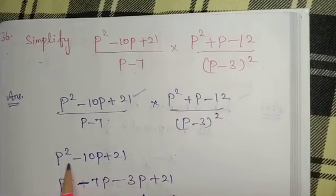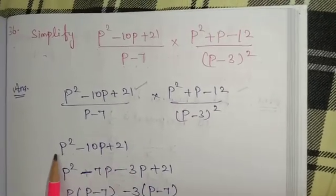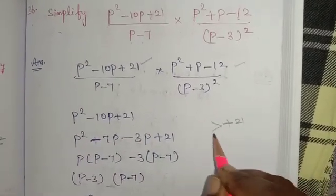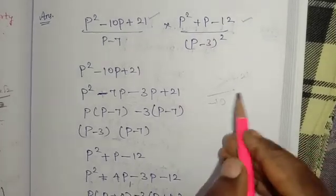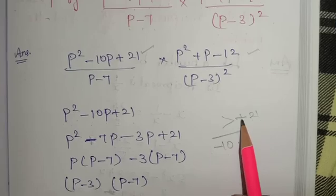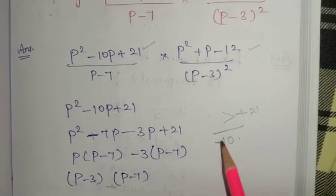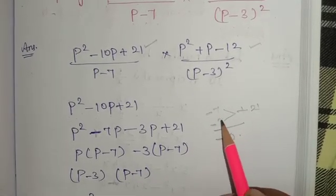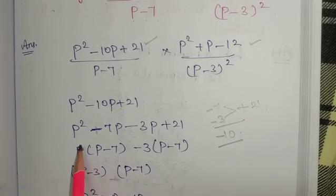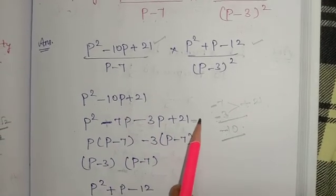So, first p squared minus 10p plus 21. Multiply gives 21, add gives 10. This is minus. The sign is minus. Then 7, 3 is 21. Minus into minus plus. So, p squared minus 7p minus 3p plus 21 is equal to 0.